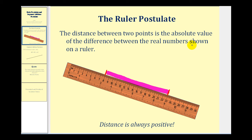And notice it doesn't specify in order, so we can take the absolute value of twenty-three minus eight or take the absolute value of eight minus twenty-three.